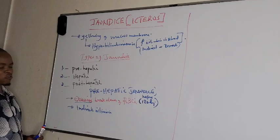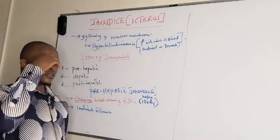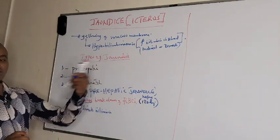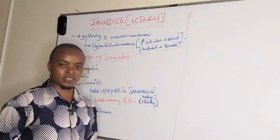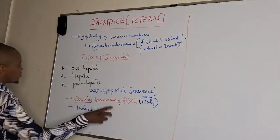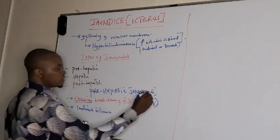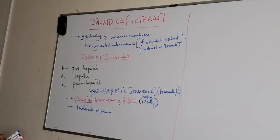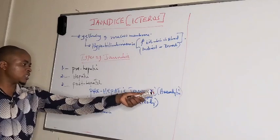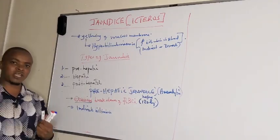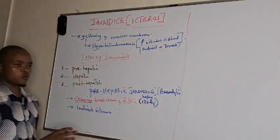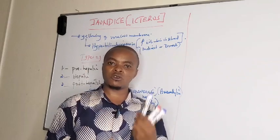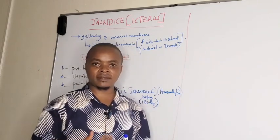Why is it indirect hyperbilirubinemia? The reticuloendothelial cells are producing more indirect bilirubin than what UDP-glucuronosyltransferase can conjugate in the liver hepatocytes. So the type of hyperbilirubinemia in pre-hepatic, or what we call hemolytic jaundice, is indirect — because there is excessive hemolysis of red cells, forming more indirect bilirubin than what UDP can conjugate, leading to indirect hyperbilirubinemia.